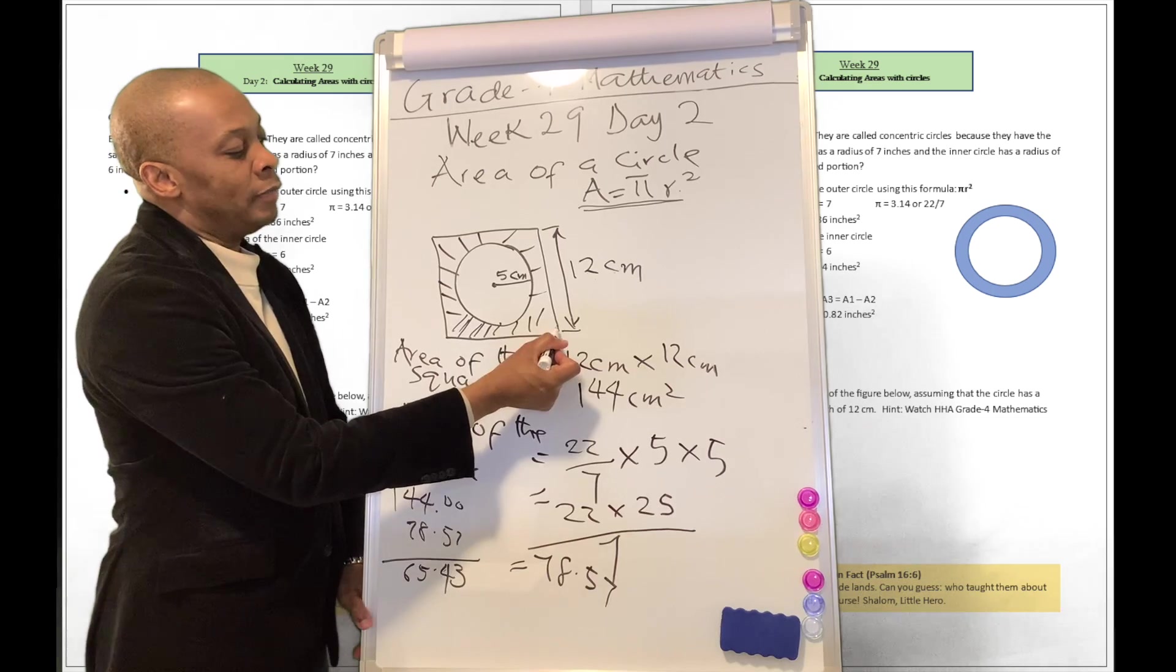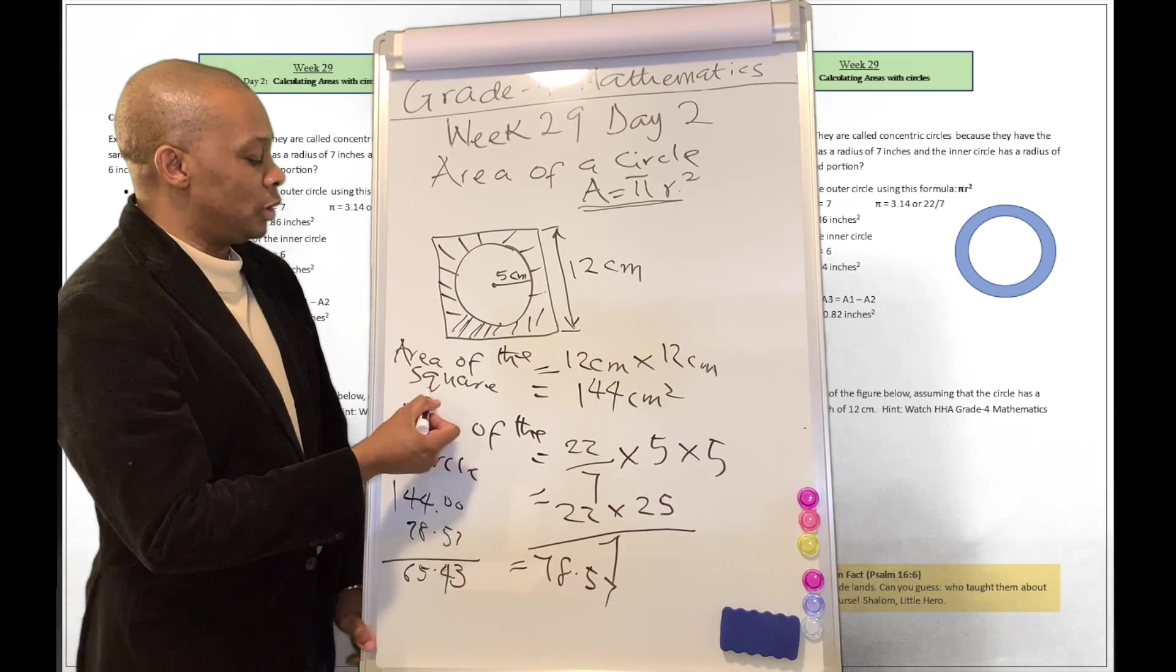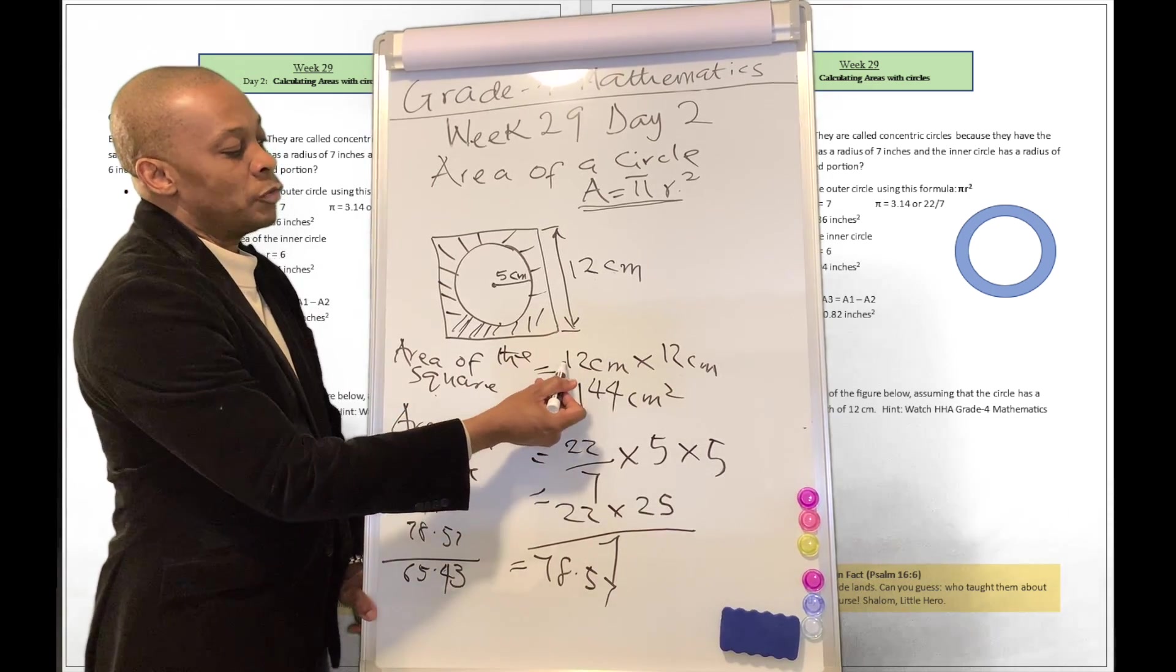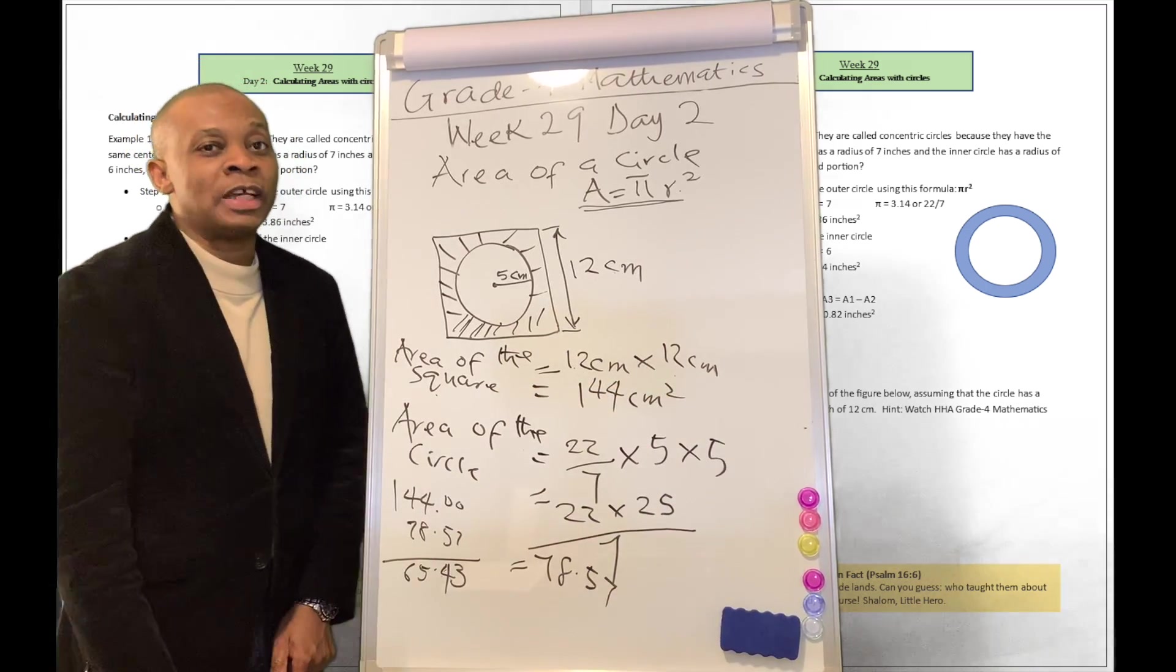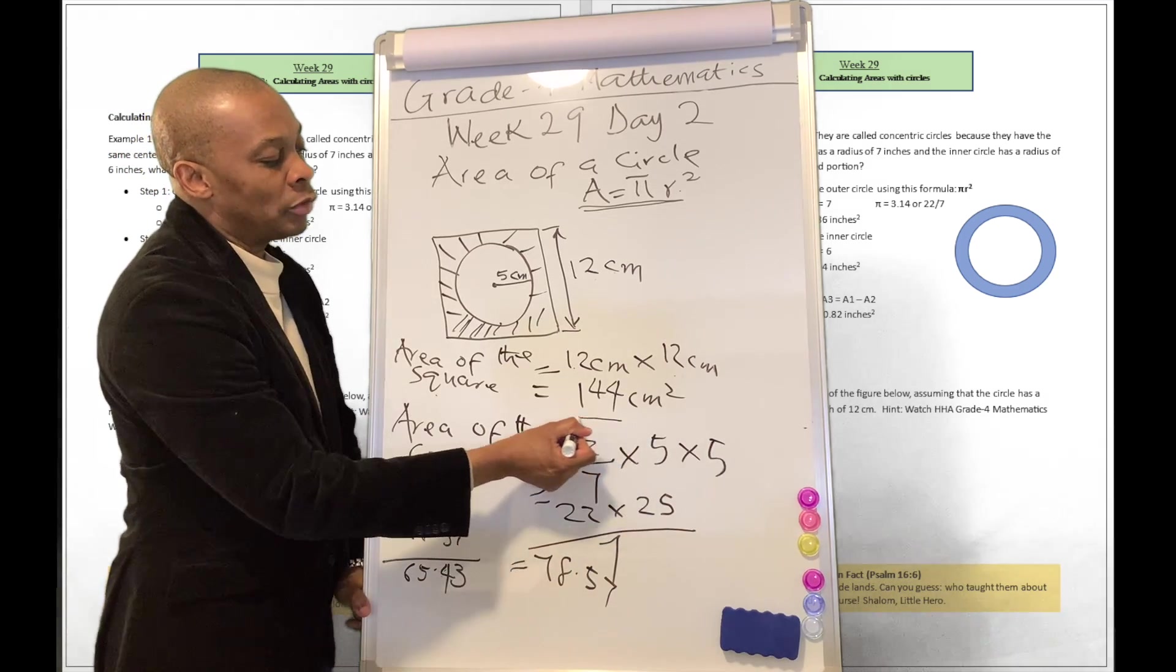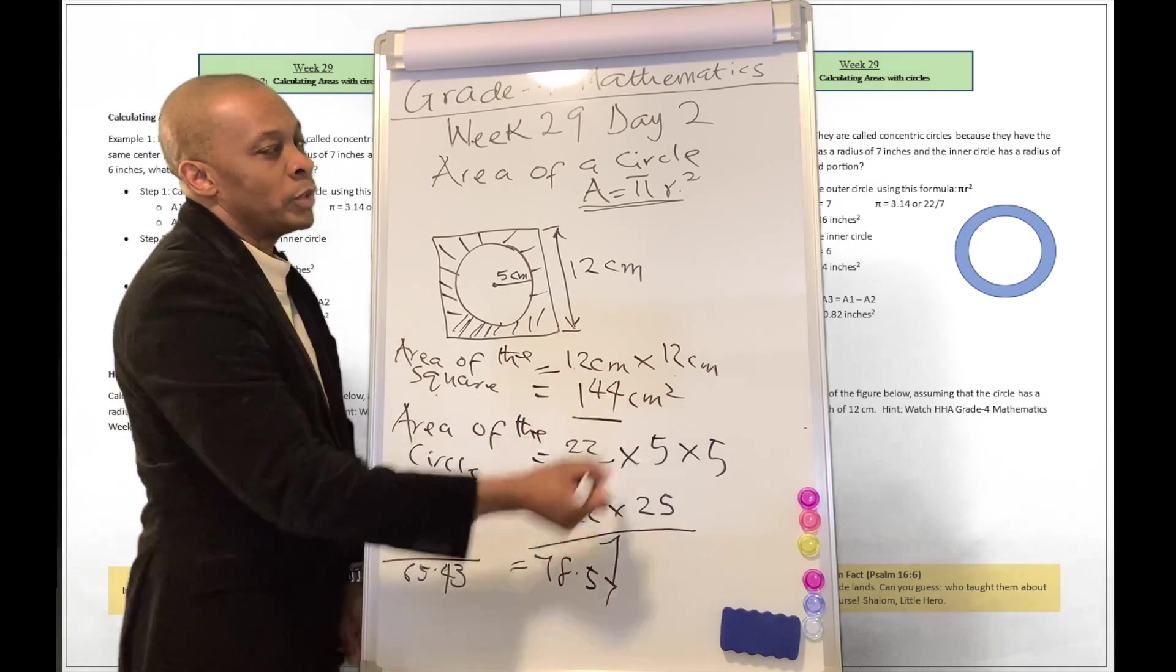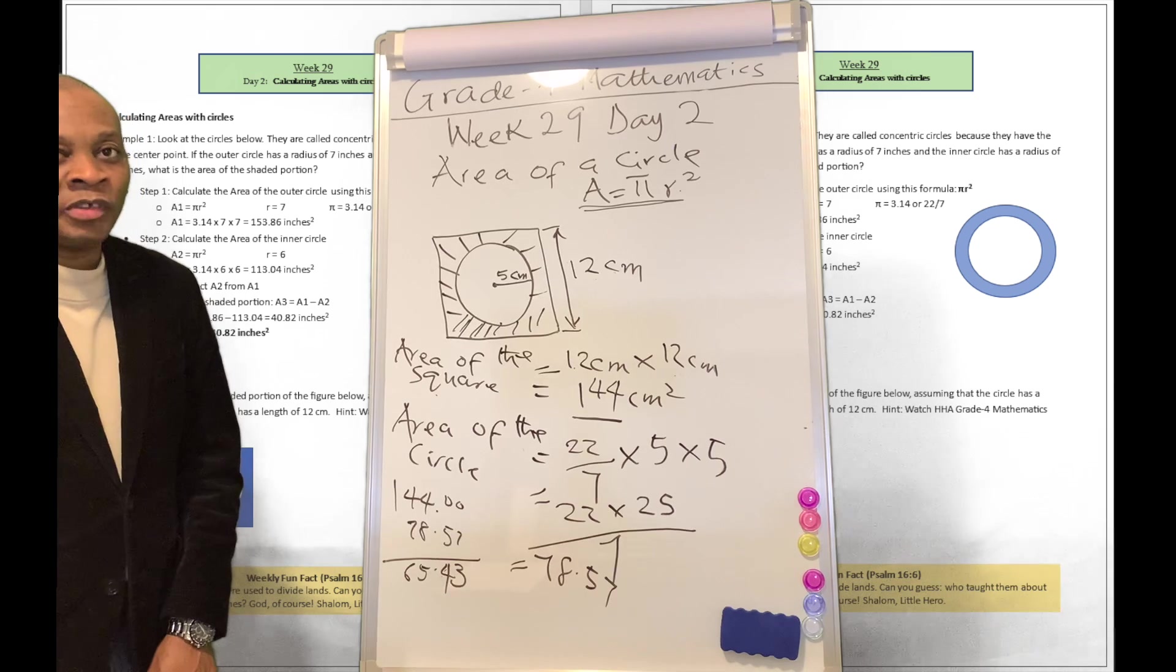You're going to calculate the area of the square first, which the area of the square is going to be equivalent to 12 centimeters, multiplied by 12 centimeters. When you do that again, you're going to get 144 centimeters squared.